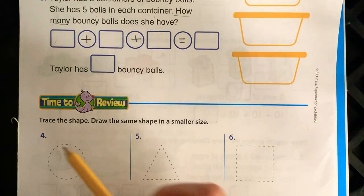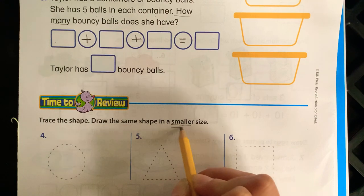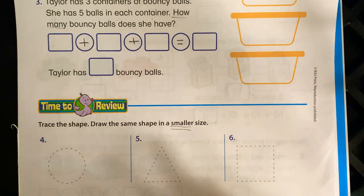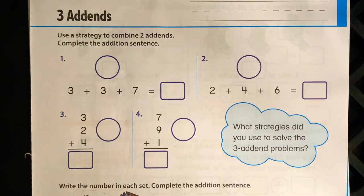And then on the bottom, trace the shape. Draw the same shape in a smaller size. That's pretty easy. I know you guys can handle that on your own. Let me know if you have any questions that have to do with three addends. Have a great day, guys.